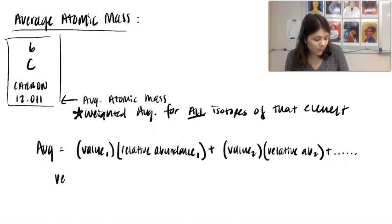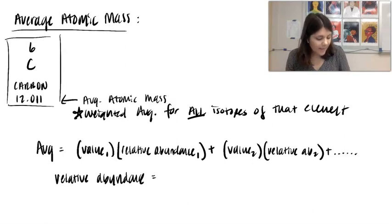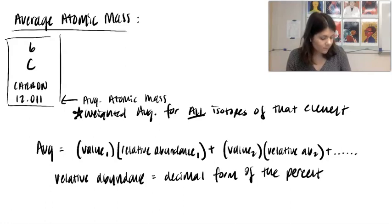And so what the relative abundance is, it's actually the decimal form of the percent.